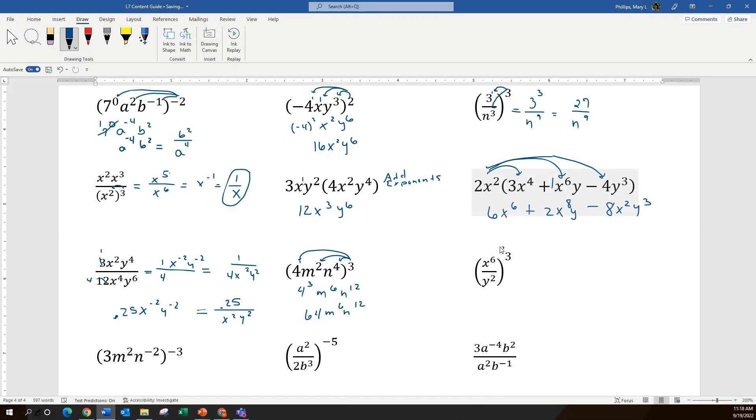For the next one, same thing. Exponent outside multiplied to all the exponents inside. And so on the top, I have x to the 18th. On the denominator, I have y to the 6th. Nothing is going to reduce here because I have different bases of x and y.